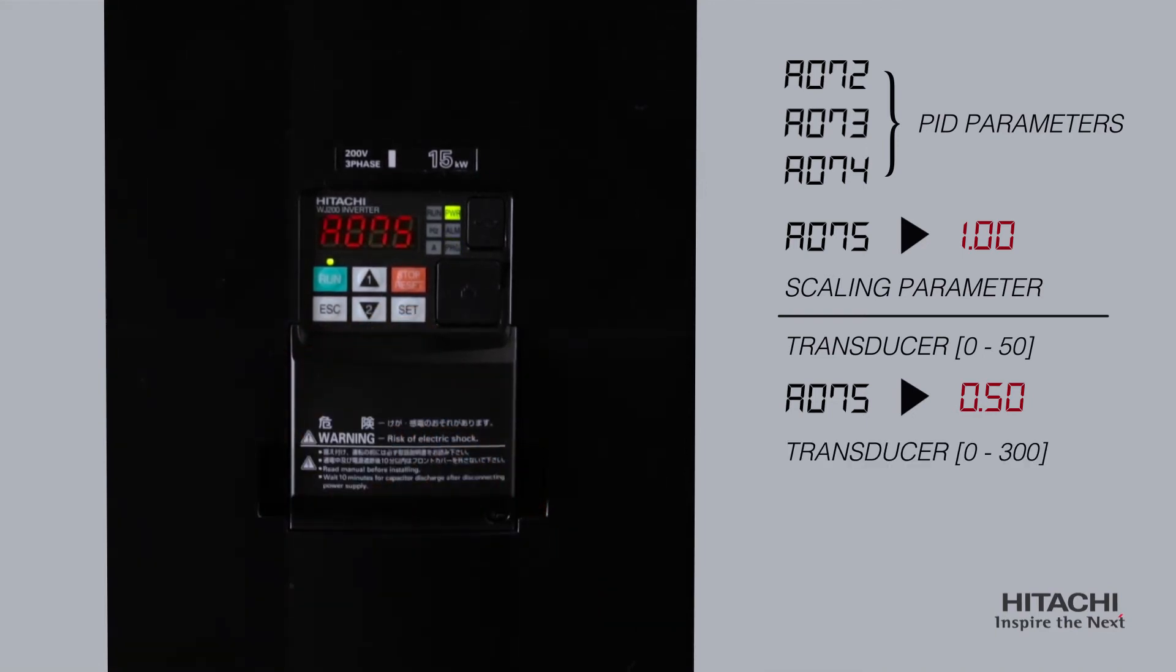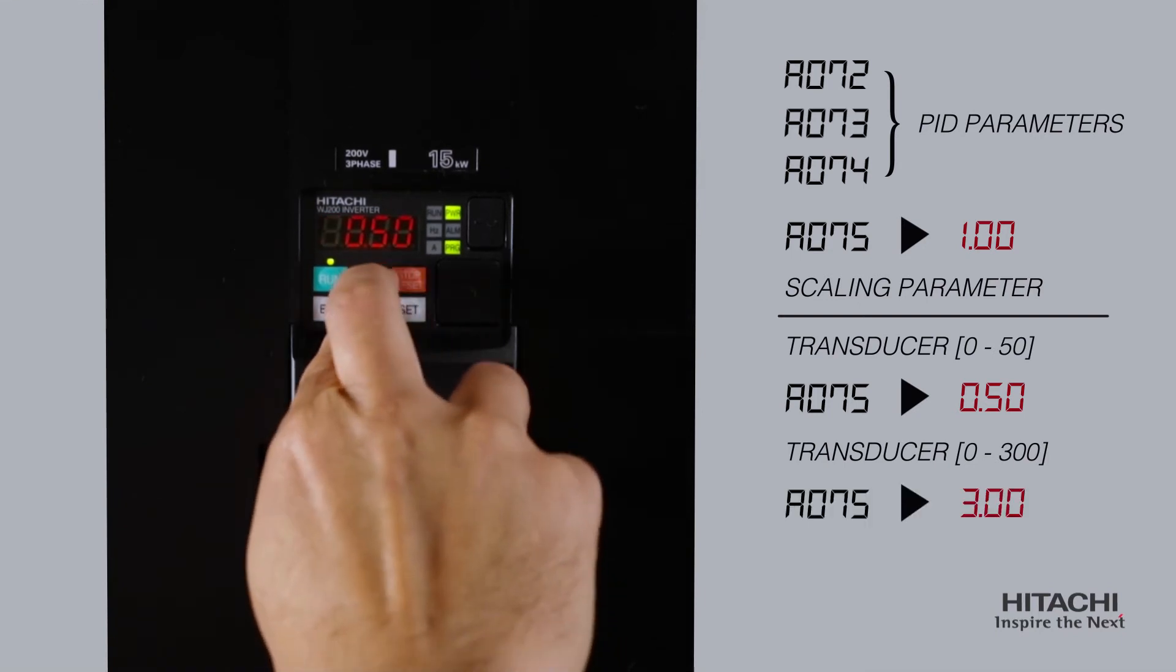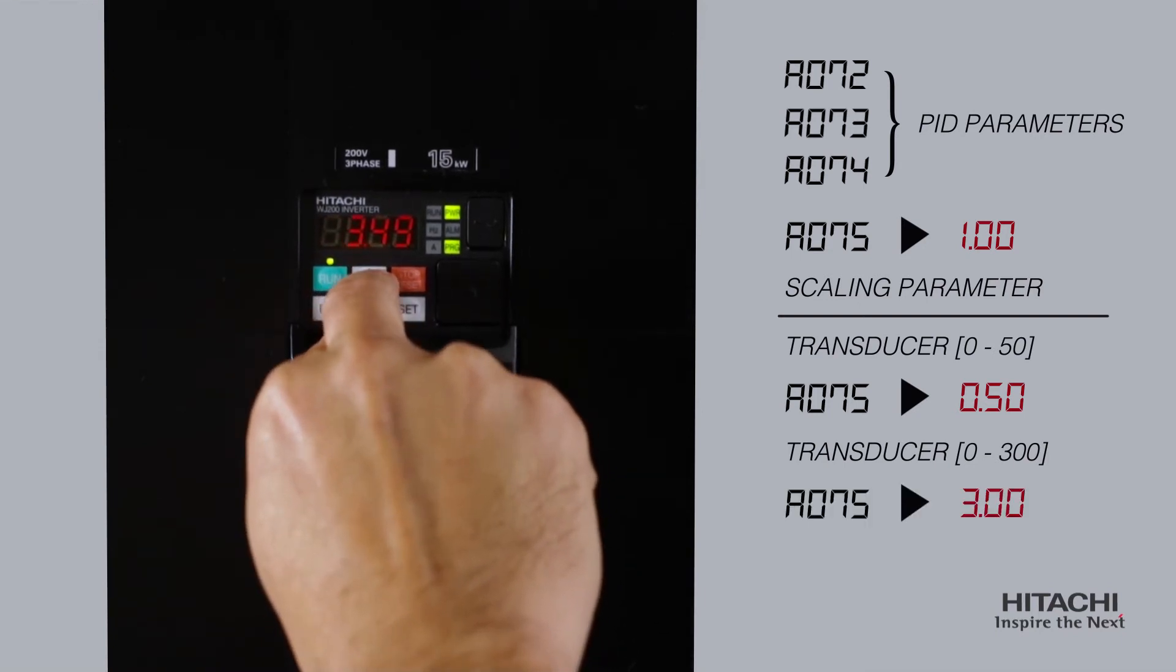If the transducer is 0 to 300, change A75 to 3 and so on.